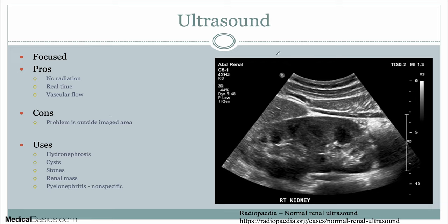The cons are that if there's any abnormality outside the field of view — namely if you have some abnormality in your pancreas, liver, or anywhere else — you're not going to be able to see it. The main uses are going to be, probably the number one reason that you get a renal ultrasound, especially as an inpatient, is going to be for hydronephrosis.